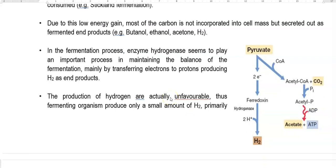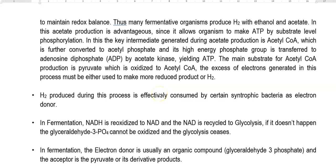During the process of fermentation, the main enzyme involved is hydrogenase. It plays an important role in maintaining the balance of the fermentation process by transferring electrons to protons and producing hydrogen as an end product. The production of hydrogen is actually an unfavorable process, so fermenting organisms usually produce very low amounts of hydrogen. Many organisms produce hydrogen along with ethanol and acetate as end products. Acetate production is advantageous for the organism since it helps make ATP by substrate level phosphorylation.